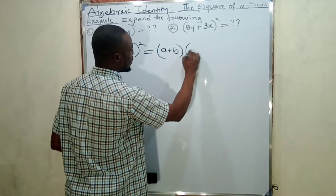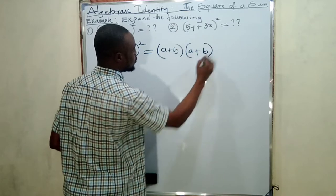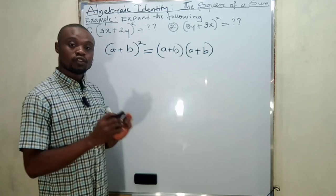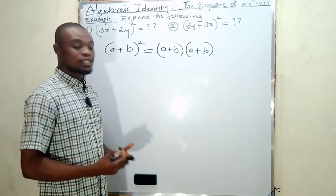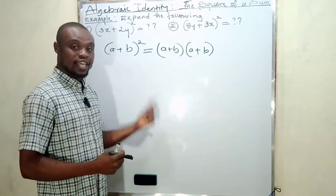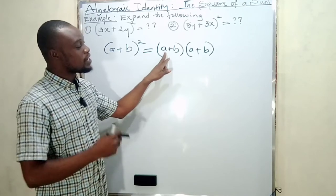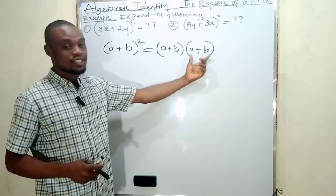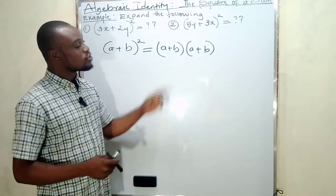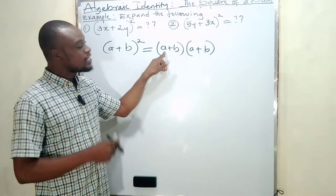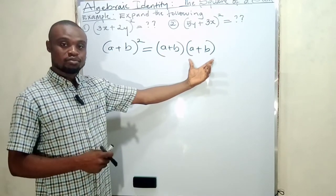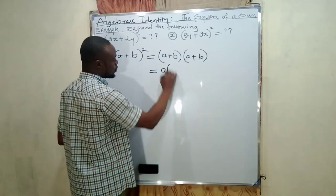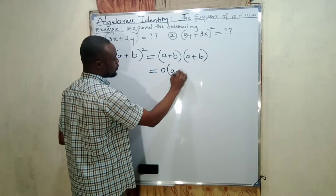Multiplying the second bracket, also (a + b). There are two ways to expand this. The first method uses the first term in the first bracket — which is 'a' — and the second term, which is 'b'. We use the first term in the first bracket to multiply the second bracket, and likewise the second term multiplies the second bracket. So: a multiplying (a + b).